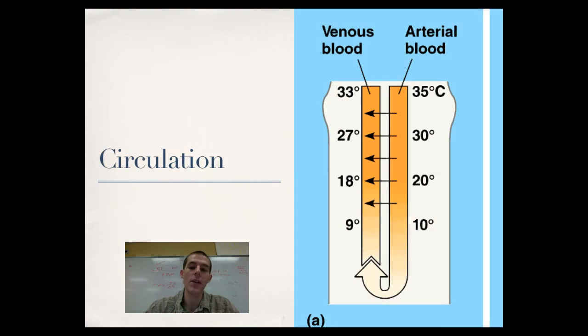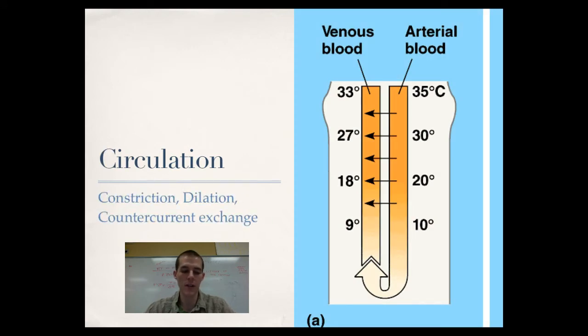Next to insulation, we've got circulation. Now, this is a really interesting situation called counter-current exchange. I'll talk about that in a second. The two easy ones are constriction and dilation. And so, obviously, your blood, since it is aqueous, it carries a lot of heat, and it has the ability to give up or take in heat.